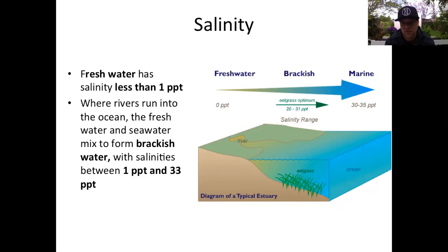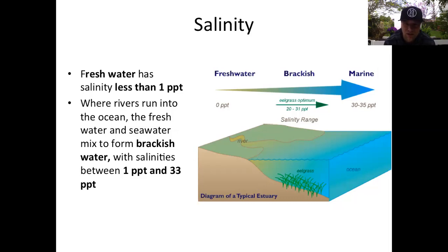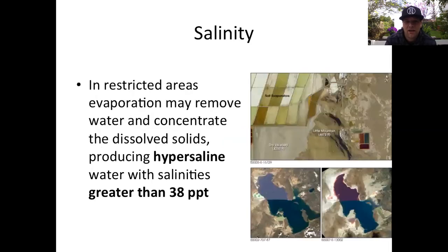Salts can be challenging for plants and living organisms, so understanding how salinity changes matters. Different groups of organisms can live within different salinity ranges. To summarize: fresh water is less than 1 PPT, brackish water is 1 to 33 PPT, and regular open ocean is 33 to 38 PPT.